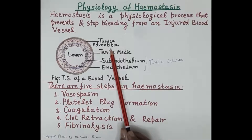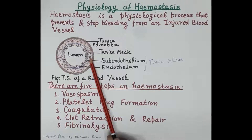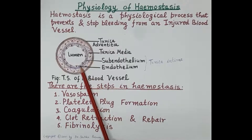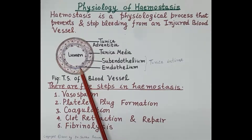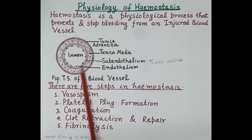The tunica adventitia is made up of fibrous tissue and its main purpose is protection. The central layer, tunica media, is made up of smooth muscle cells. When these smooth muscle cells contract, there is narrowing of the blood vessel; when they relax, there is widening. The innermost layer, tunica intima, is made up of two sub-layers: the innermost is the endothelium, made up of endothelial cells, and below it is the sub-endothelium, made up of collagen.